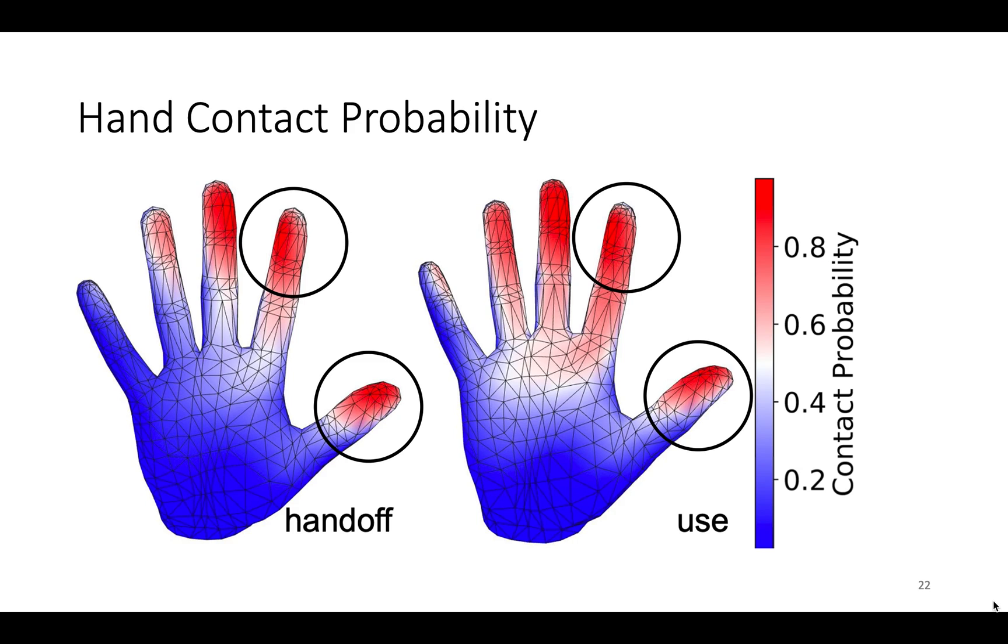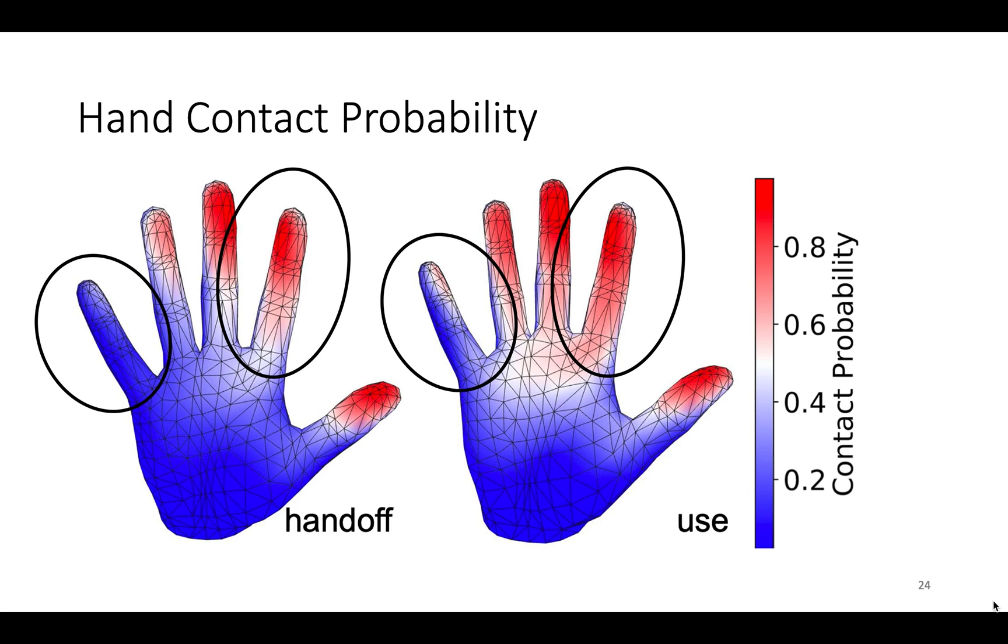The thumb and index finger are the most contacted fingers, and tips are the most contacted phalanges, as expected. But a lot of contact surprisingly happens at the non-fingertip areas as well. Contact probabilities of all three index phalanges are much higher than the little finger. This indicates that all fingers are not used equally during grasping, and can inform robotic hand design. Finally, contact is concentrated at the thumb and index finger for handoff, whereas it is more spread out for use.